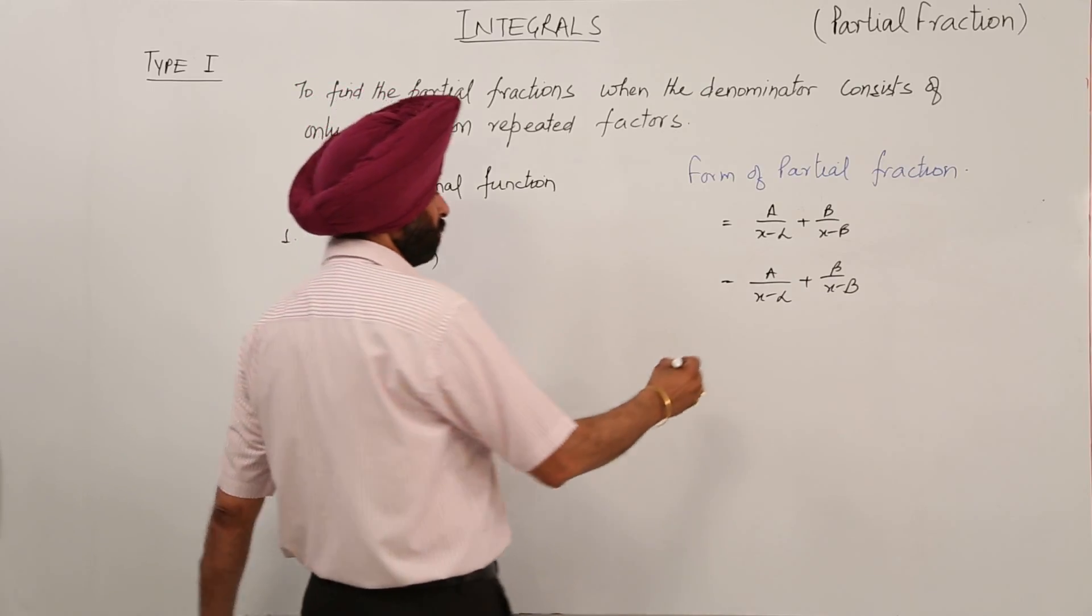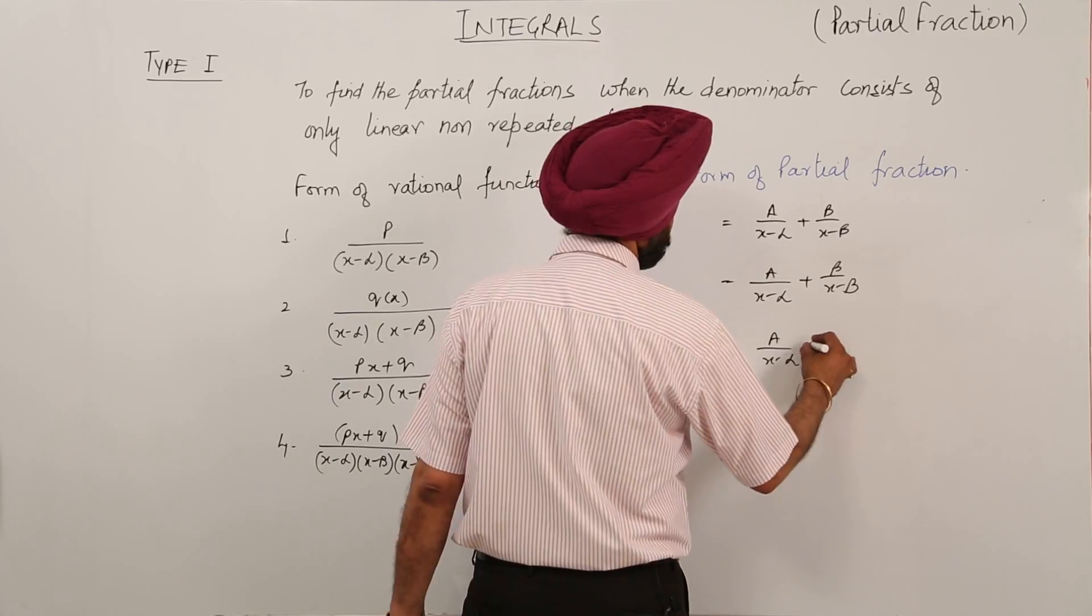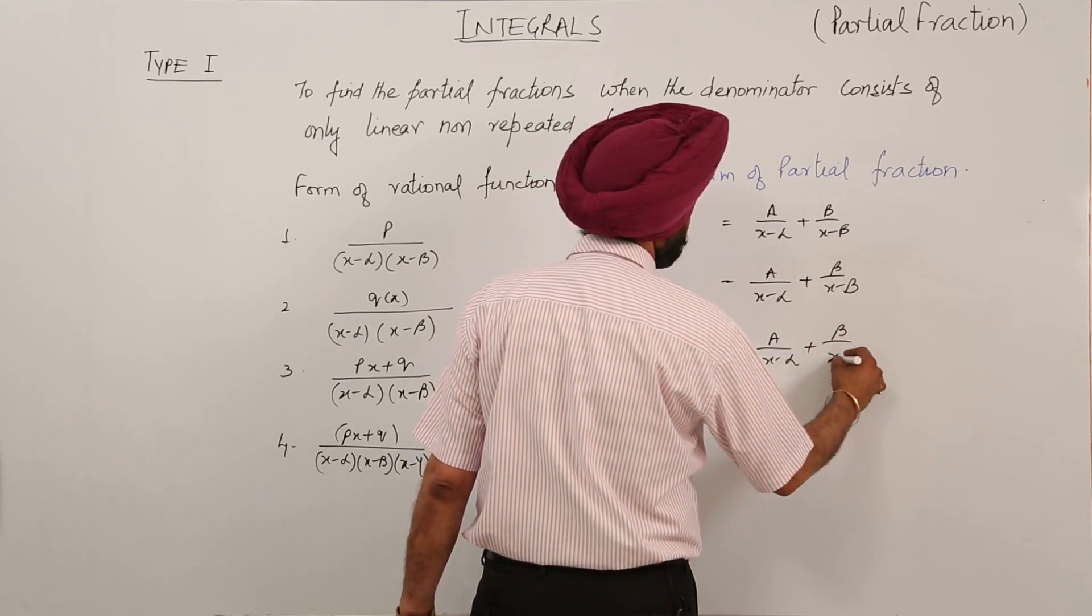Same third form, it can be written as A upon x minus alpha plus B upon x minus beta.